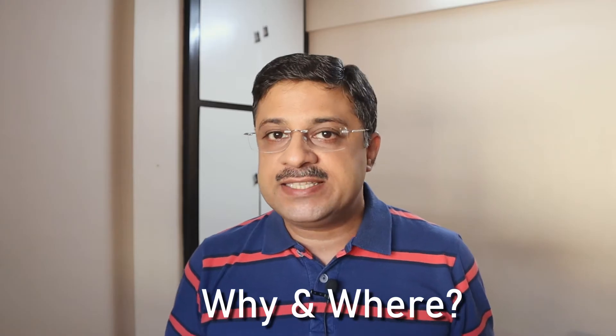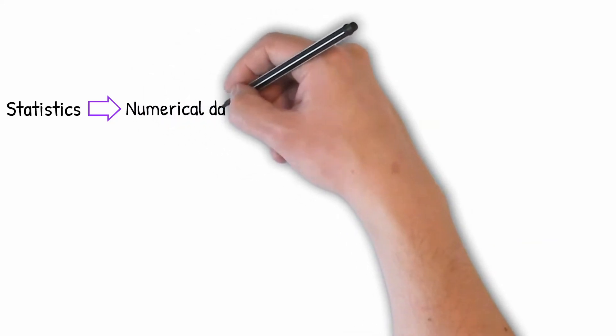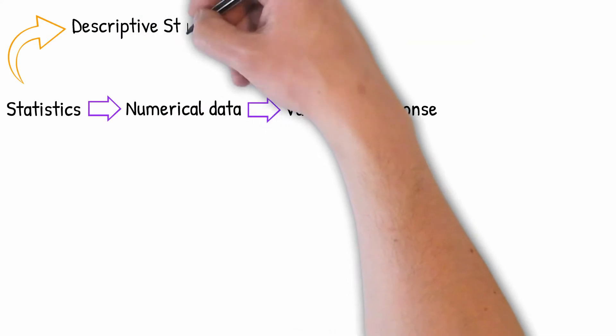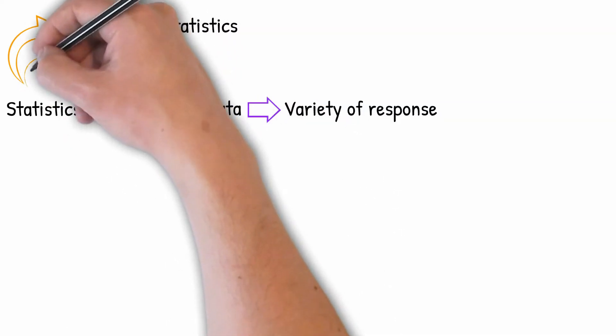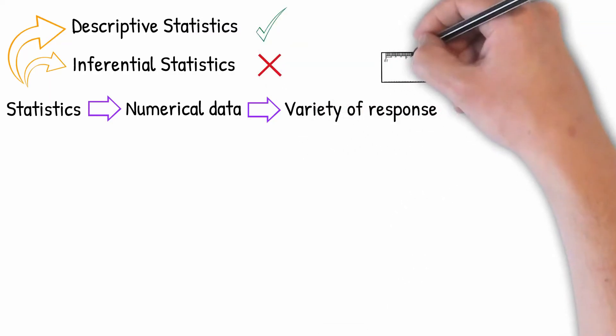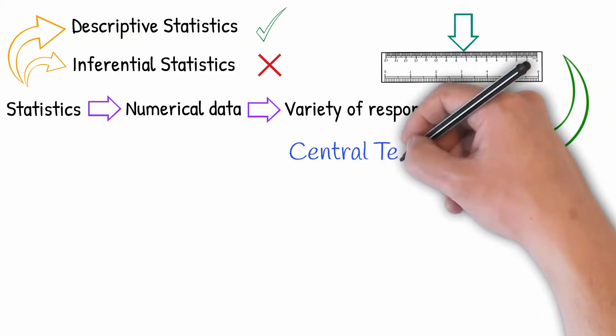We will begin with the concept of some statistical measures with real-life illustrations. This should provide you with a fair understanding of why and where such measures should be utilized. Statistics is all about numerical data that has a variety of response. Statistical analysis can be categorized into descriptive statistics and inferential statistics. We will leave the latter for a separate video. In descriptive statistics, if we want to provide an on-average response or a middle-of-the-road response, we would be trying to gauge the central tendency of the data.